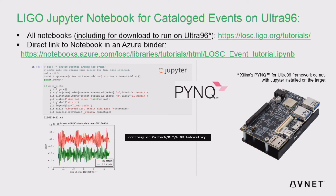This is a Jupyter notebook they've made public. If you stopped by the other day, the Jupyter notebook is doing the signal processing to find the signatures of the gravity wave — I had that running on the Ultra96. If I had had more time and my boss would let me do the things I think are fun, I would have accelerated that signal processing, because as I told you it's a radio signal processing problem.